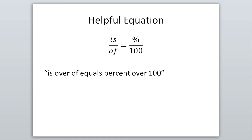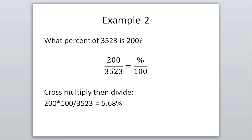Another helpful definition is a kind of a formula: 'is over of equals percent over 100.' You might have heard this in a previous math class. I like this formula because it helps you put things in the right place when working on problems. For example: what percent of 3,523 is 200? The word 'of' is attached to 3,523, so that goes on the bottom, and 200 is attached to 'is,' so that goes on top.